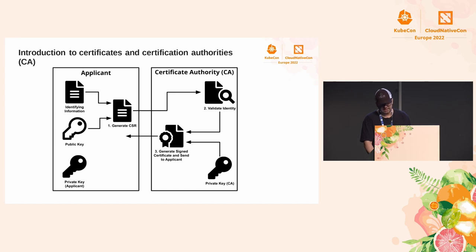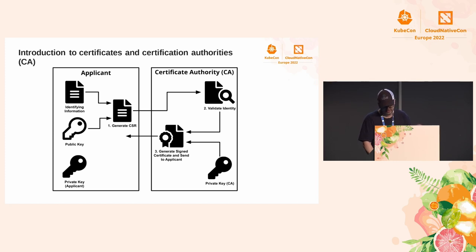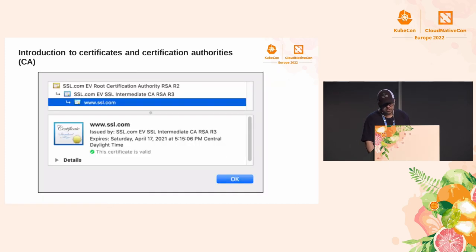Along with a certificate signing request, the requestor submits this request to the CA, which verifies the information it contains. If the information is correct, the CA signs the certificate with its private key and sends it to the requester. In most cases, a hierarchy of certificates is used to verify the validity of an issued certificate, and this hierarchy is known as the chain of trust.